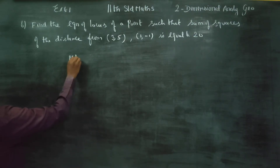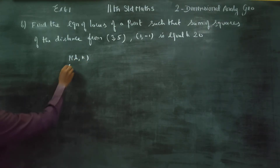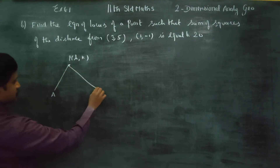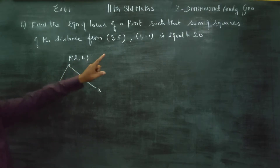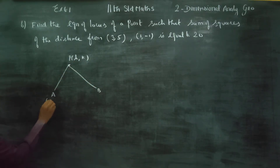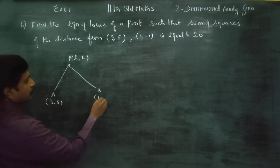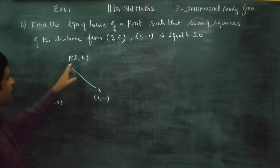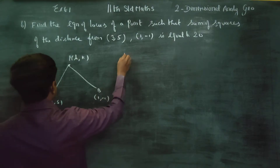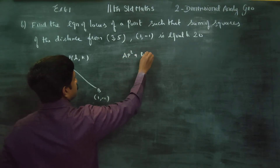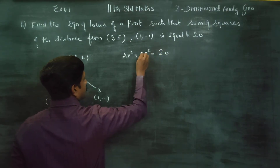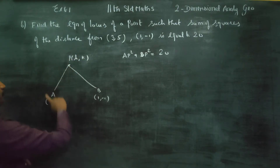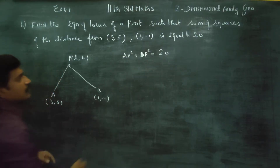Here is one point. This is a moving point P(h,k). What rule is the point? Here is point A(3,5) and point B(1,-1). The condition is: sum of the squares of the distances from (3,5) and (1,-1), that is AP² plus BP², is always equal to 20. This is given.